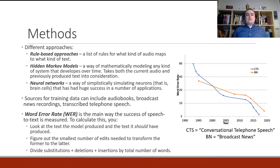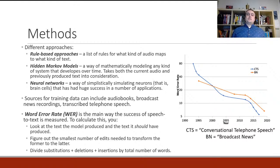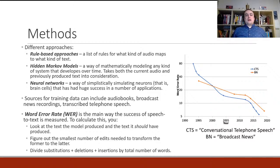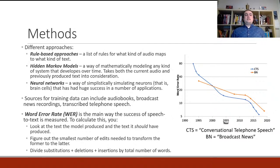Sources for training data are also important. How are you going to teach models like neural networks to do this process? You need a lot of audio data and a lot of written text that corresponds to that audio. Popular datasets include public domain audio books — you teach the model to map from the audio of the book to its written text — as well as broadcast news recordings and transcribed telephone conversations.